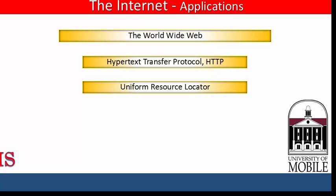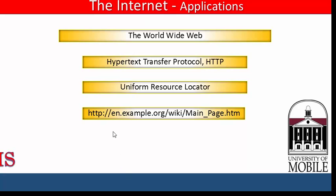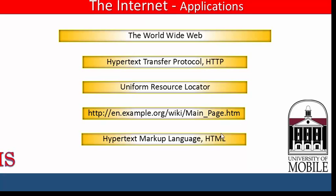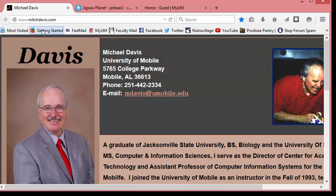Let's take a look at one. HTTP colon slash slash en.example.org slash wiki slash main underscore page dot htm. HTM stands for Hypertext Markup Language, which is the original scripting language for the World Wide Web environment. Here's an example of a URL: www.mitchdavis.com.